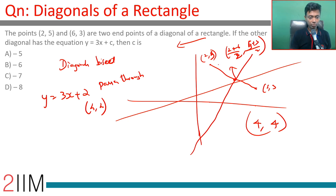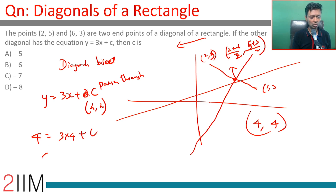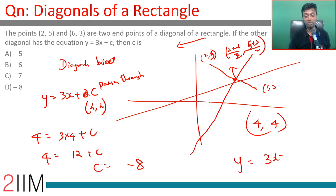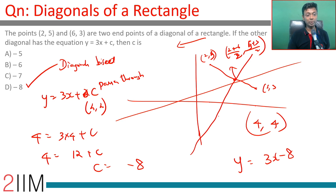Substitute x equals 4 and y equals 4 — this should be satisfied. So 4 equals 3 times 4 plus c, giving us 4 equals 12 plus c, therefore c equals minus 8. We get the equation y equals 3x minus 8.